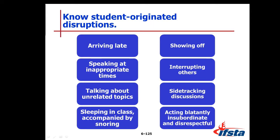Student-originated disruptions include: arriving late, speaking at inappropriate times, talking about unrelated topics, sleeping in class, showing off, interrupting others, side-tracking discussions, and acting blatantly insubordinate and disrespectful. You'll see these in class. Make sure you take the time to document what's happening factually — not emotionally, factually — and then provide that information to the student so they understand the exact expectations.